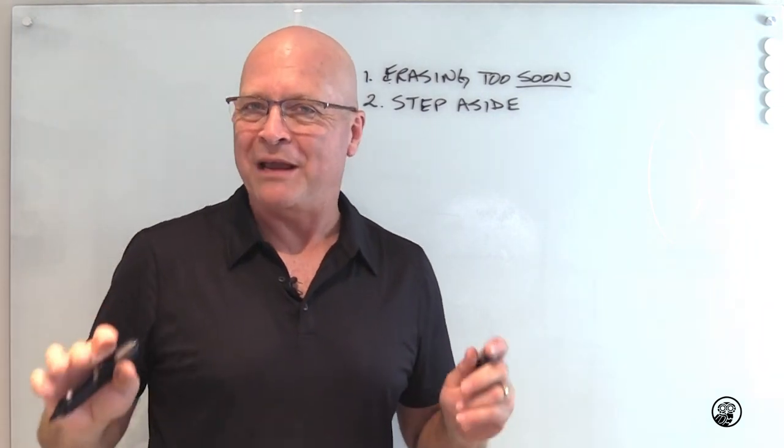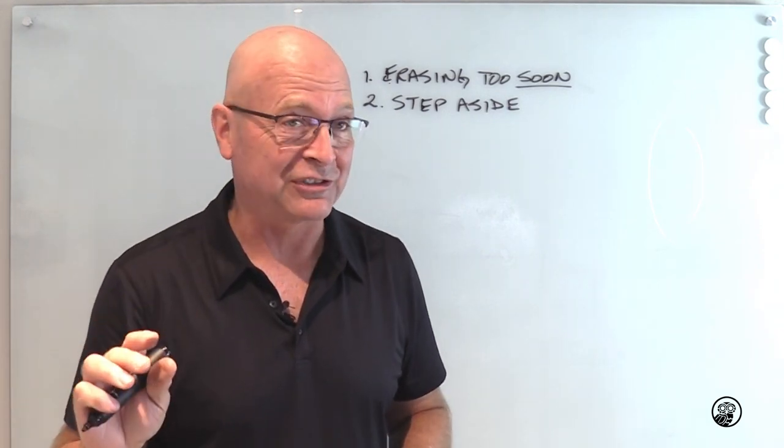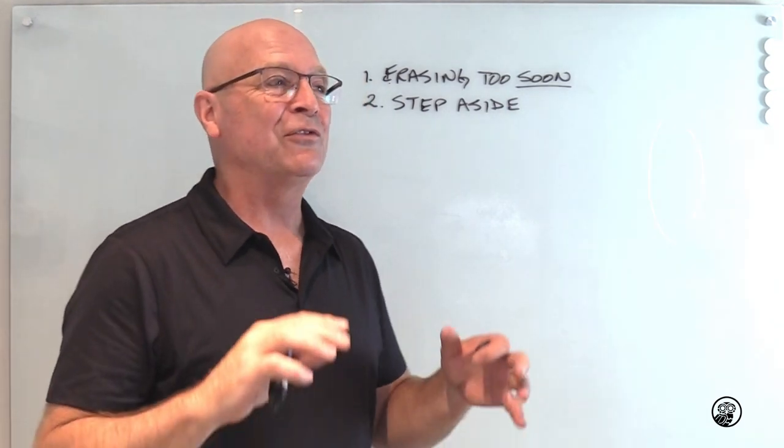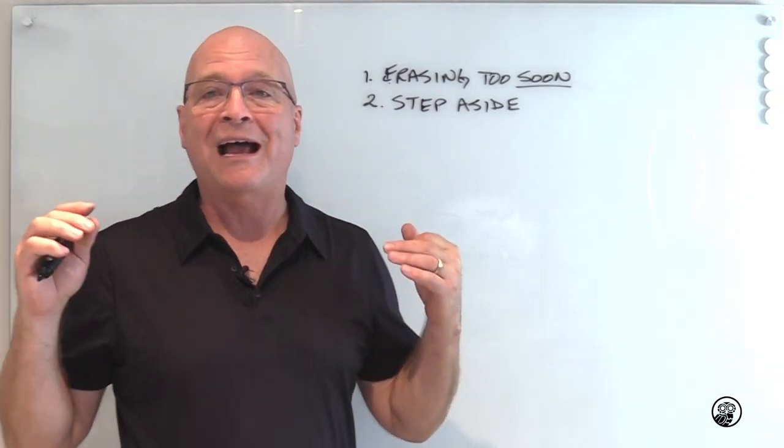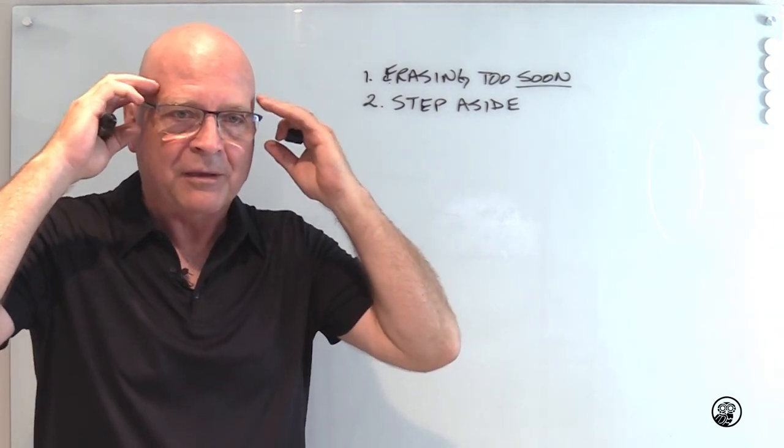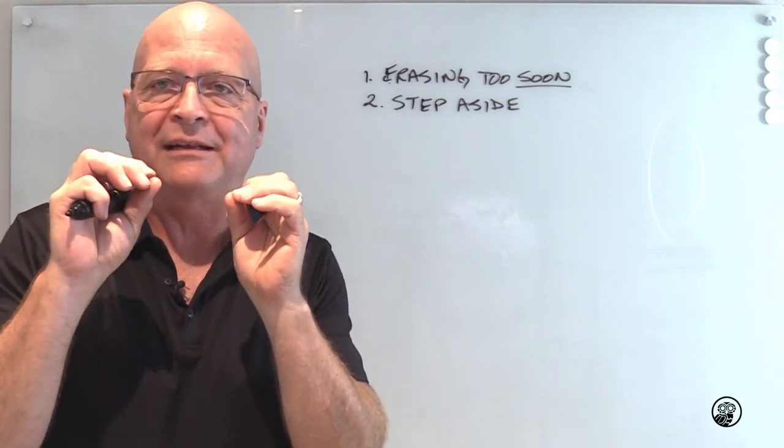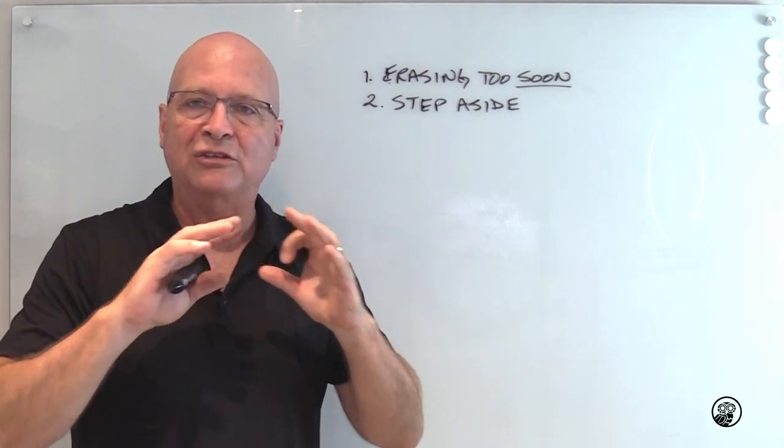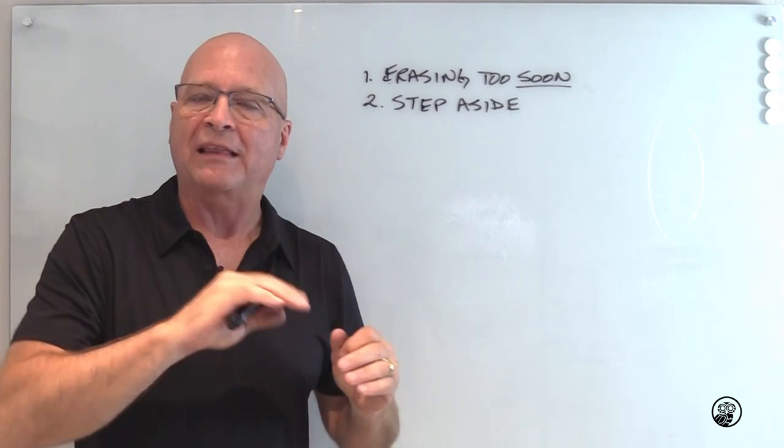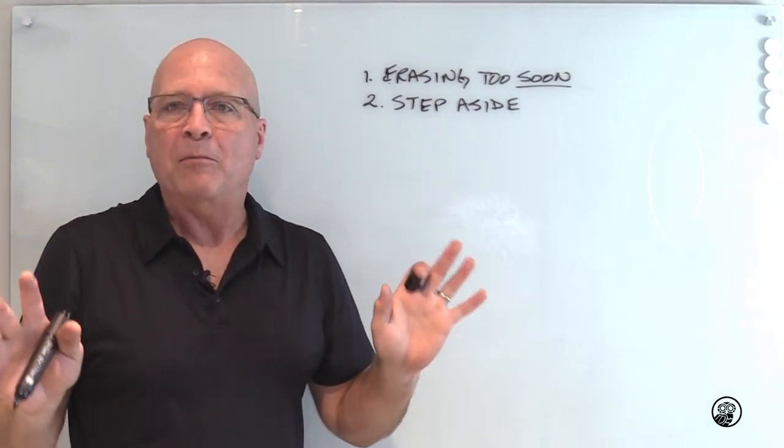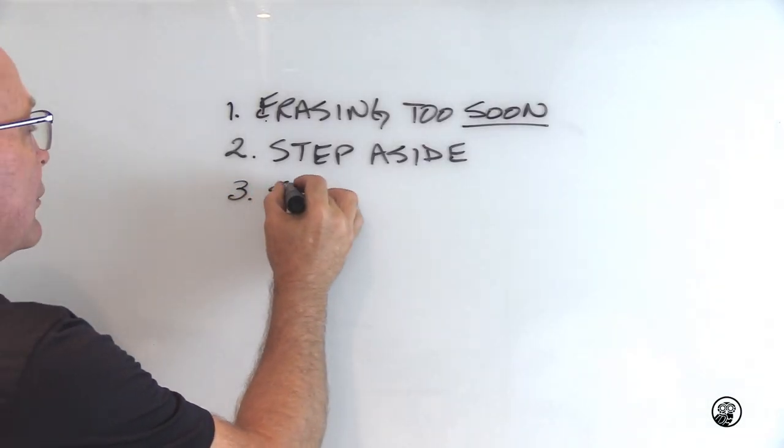Number three of the mistakes people make while whiteboarding is not writing straight. If you're putting stuff on the board and it's not straight, the sub message going out to people is that it's a messy board. It's not organized and it's not being communicated effectively. What you want to do is write straight unless you intend it to be off angle, such as on a wheel or drawing things out at angles.